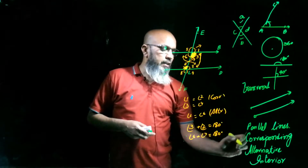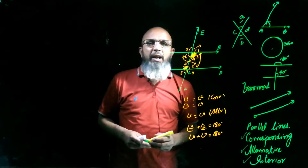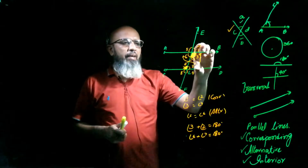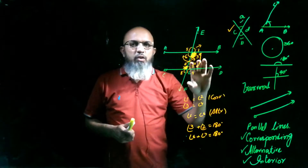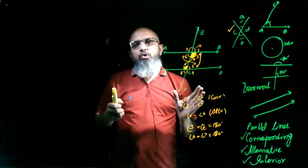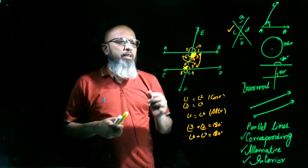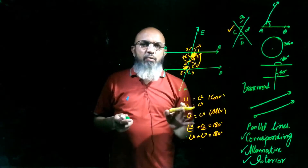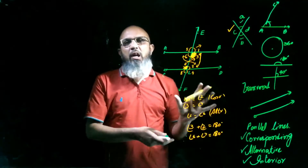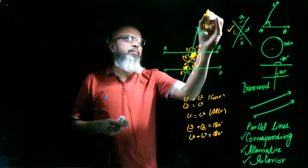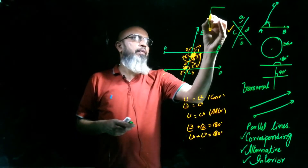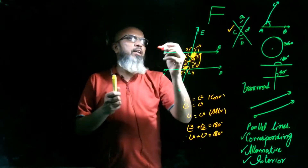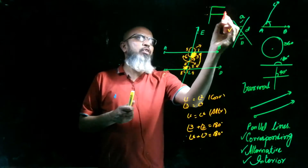So we have learned about corresponding angles, alternate angles, interior angles, and vertical angles. We will use these properties to solve geometrical questions. Now, an interesting thing — you have been writing alphabets since nursery. Let's find these types of angles in your alphabets. If I draw the letter F, these two horizontal strokes are your parallel lines, and the vertical stroke is your transversal.